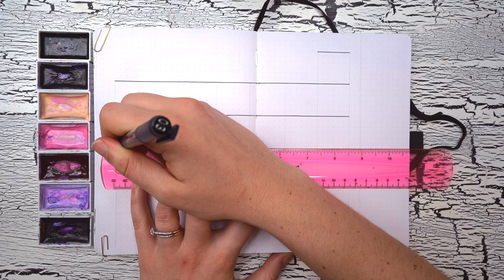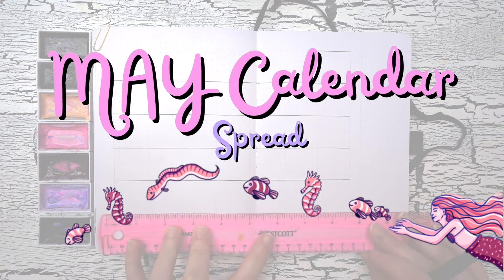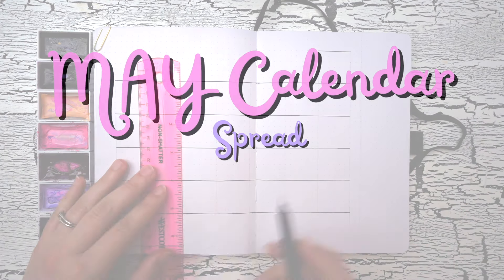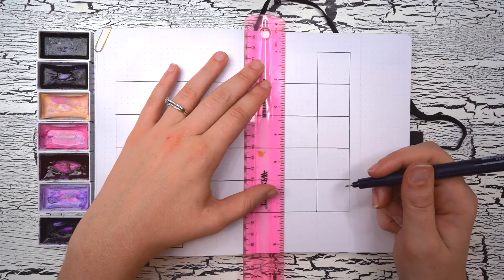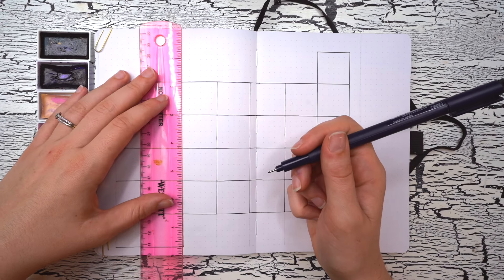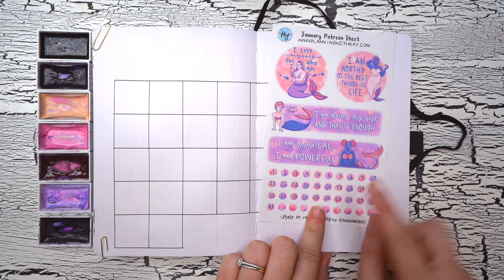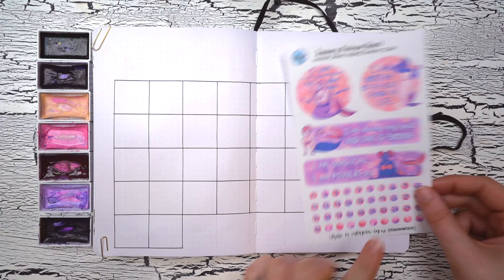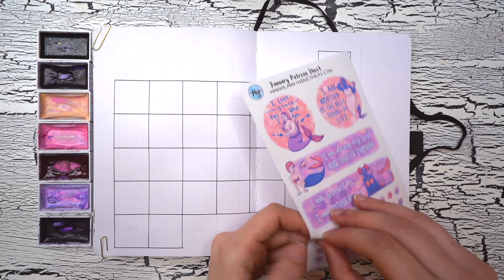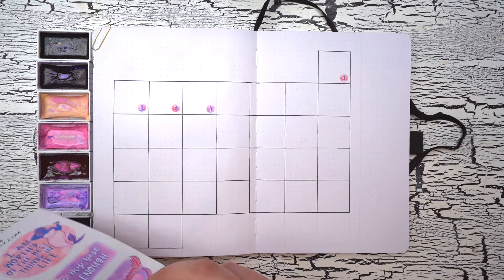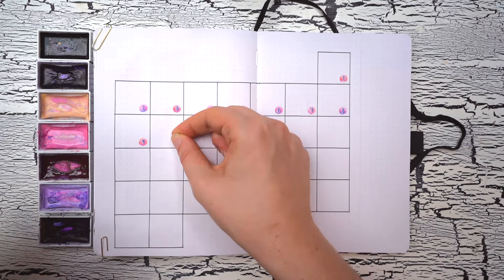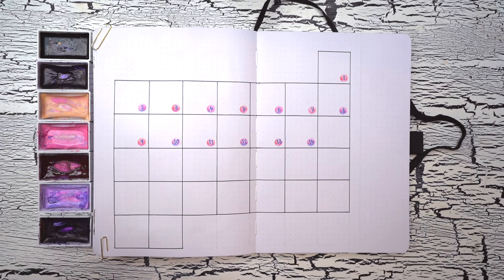With those decorative stickers laid in, that is it for my May cover spread and time to get to setting up my functional spreads in my May bullet journal setup. Starting off, of course, with my May calendar. I have a lot of different events and deadlines coming up in May. So I'm creating a big calendar that fills up almost this entire spread.